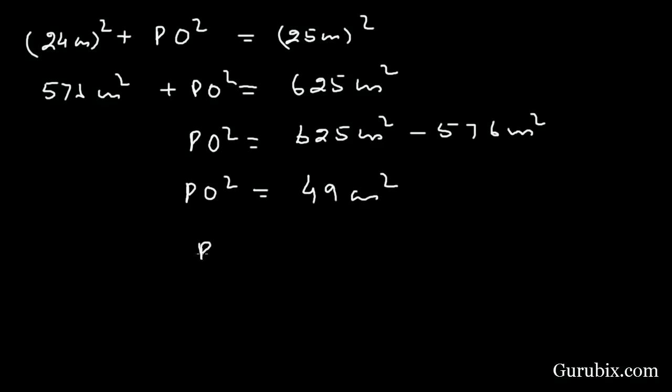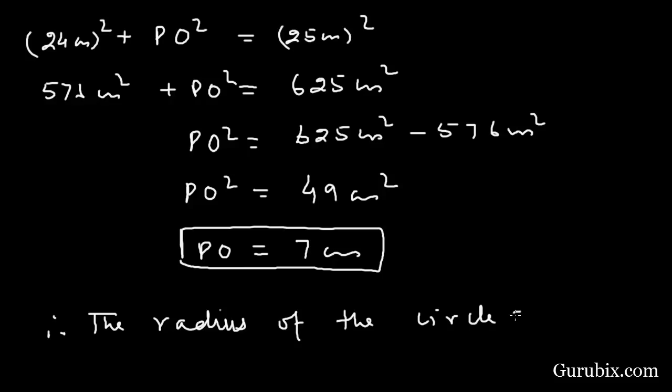PO equals 7 cm. Therefore, the radius of the circle equals 7 cm. This is the solution of the question. Thank you.